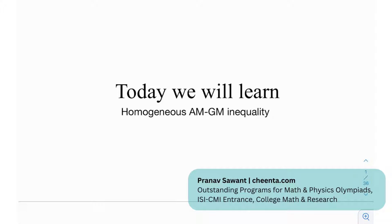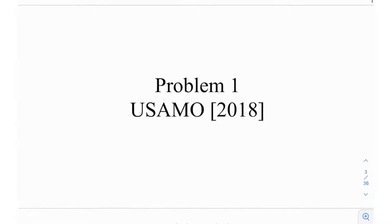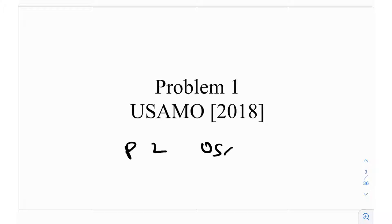Today we have a really cool question on a symmetric homogeneous AM-GM inequality. This is another demonstration of why, if the inequality is homogeneous, it's easier to solve. We'll look at two solutions: one involving the AM-GM inequality, and a second pure algebraic synthetic solution that doesn't require any standard inequalities. This is problem number one from USAMO 2018, also problem number two on the USAJMO.